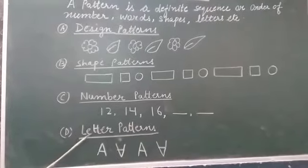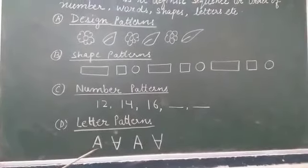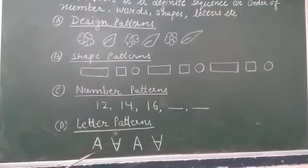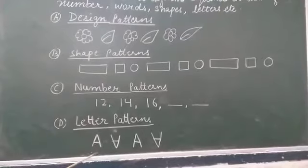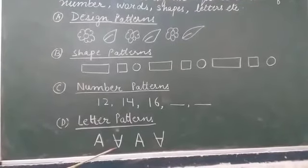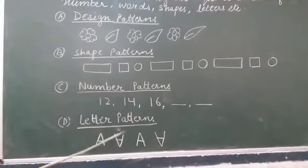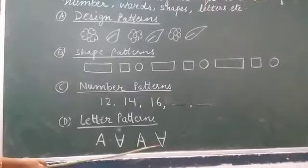Last pattern is letter patterns. Have you seen? This letter is A. The form of A is standing. This form is opposite. This form is standing and opposite.